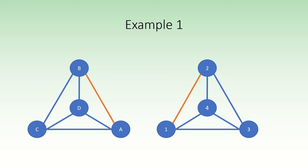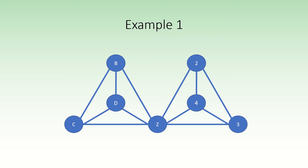Merge vertices a and one into a single vertex. Now delete the edges from z to b and from z to two. Finally, draw an edge from vertex b to vertex two. This is one result of applying the Hayosh construction to these two graphs.